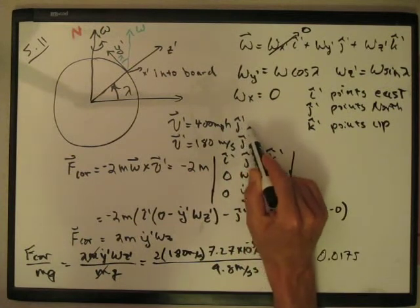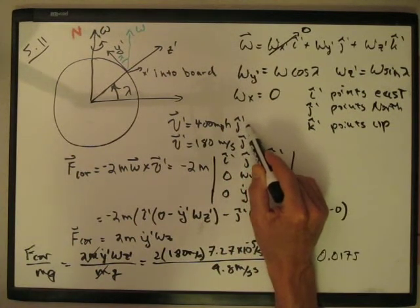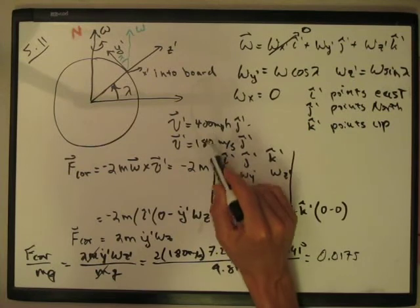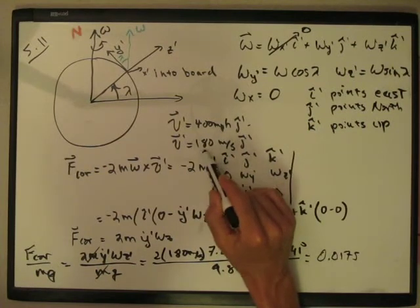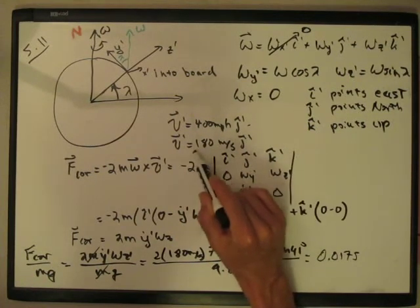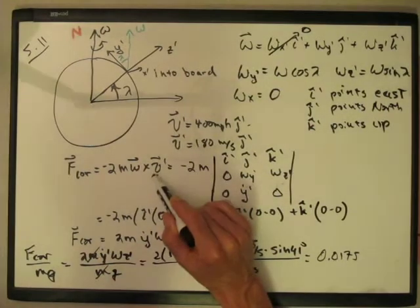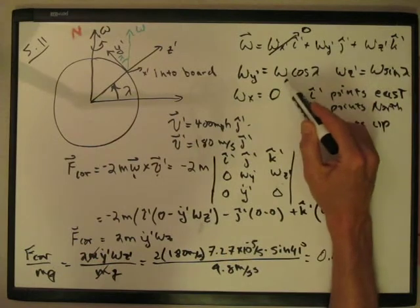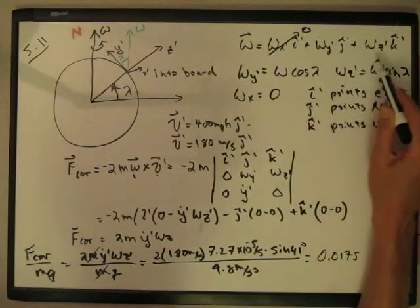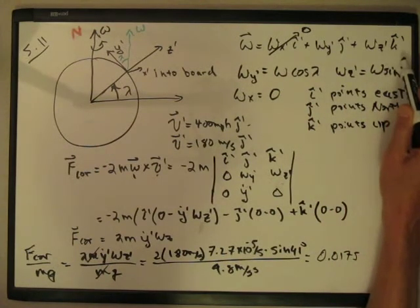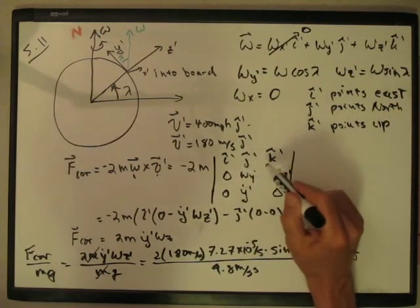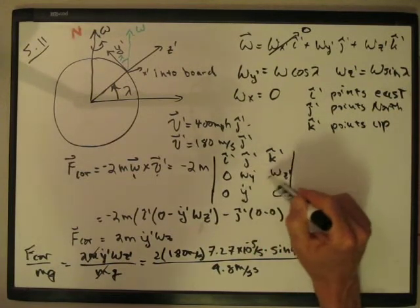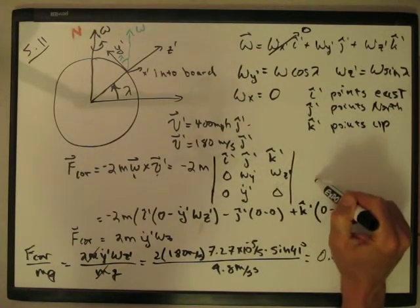And so it's on the j prime, j hat prime, in the j hat prime direction. If you convert 400 miles per hour, it comes out to 180 meters per second. And so that's my velocity that's going to go in here. This is my omega, which is going to go in here. It's omega cosine lambda j hat prime plus omega sine lambda k hat prime. And so I'm going to stick that all in here and just calculate my cross product.